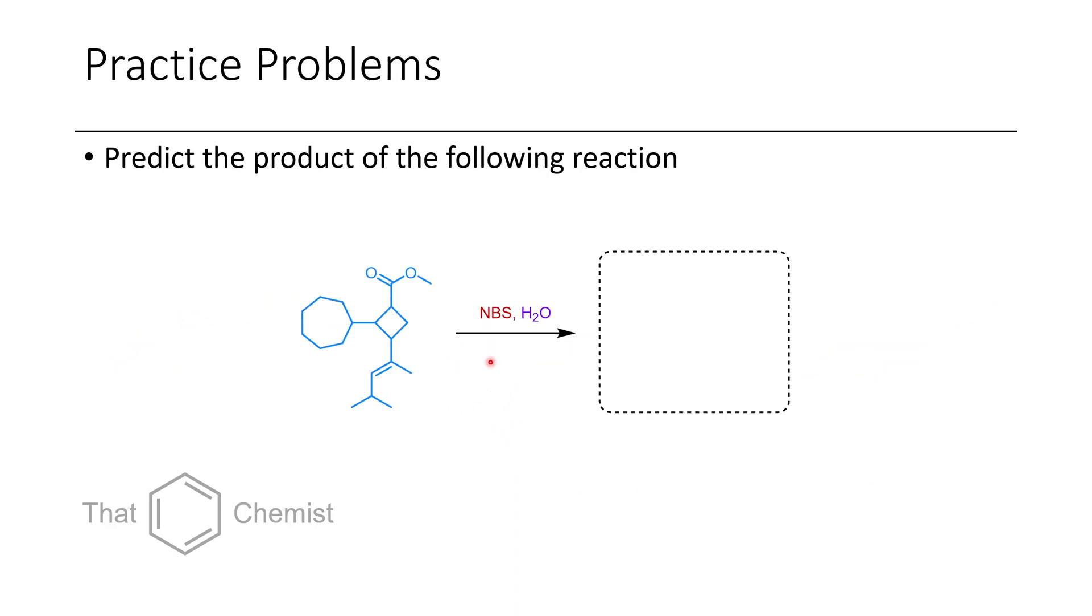Additionally, predict the product of the following reaction. You have NBS and water. What product forms? And in the last example, we have this alkene here, and we treat it with Br2. Predict the product of this reaction.